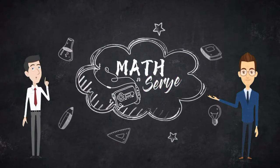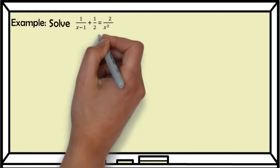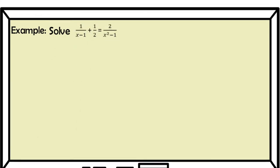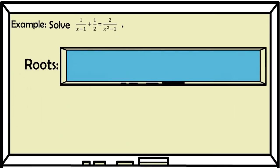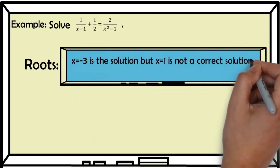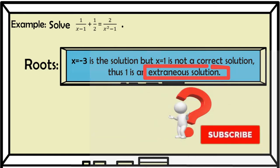Good day everyone, welcome to our Math Aseret channel. Example: we have to solve for the value of x — that is 1 over (x minus 1) plus 1 over 2, equal to 2 over (x squared minus 1). The roots for this are: x equals negative 3, which is the solution, but x equals 1 is not a correct solution. Thus, 1 is an extraneous solution.